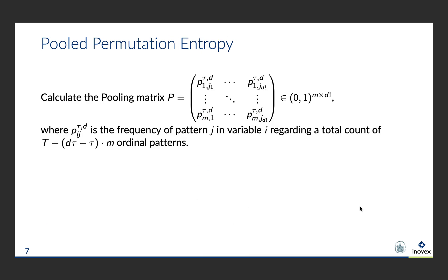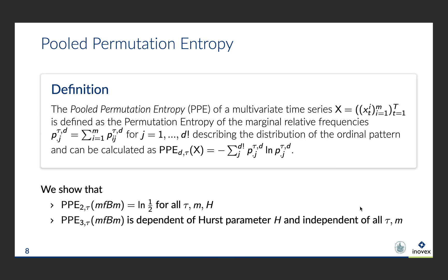Knowing ordinal pattern symbolization, we introduce pooled permutation entropy, the most popular approach by Keller and Laufer for multivariate permutation entropy. The idea of this approach is to use marginal relative frequencies of ordinal patterns regarding all variables as input for their entropy calculation. That means that for each variable and for each pattern j, all time steps for which the variable-time pair has the ordinal pattern j are counted. The relative frequencies obtained after dividing these counts by m multiplied with delta are stored in the pooling matrix p. Having these relative frequencies, pooled permutation entropy is defined as the well-known Shannon entropy of marginal relative frequencies.